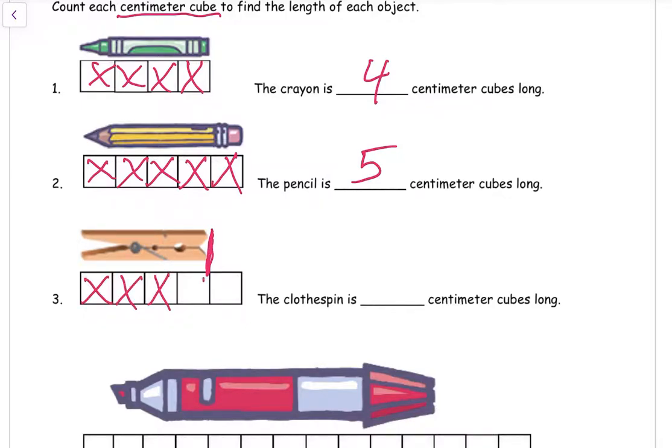So we only need to cross off one, two, three, four. The clothespin is four centimeter cubes long. So sometimes there's an extra cube. Sometimes there's more than one extra cube.